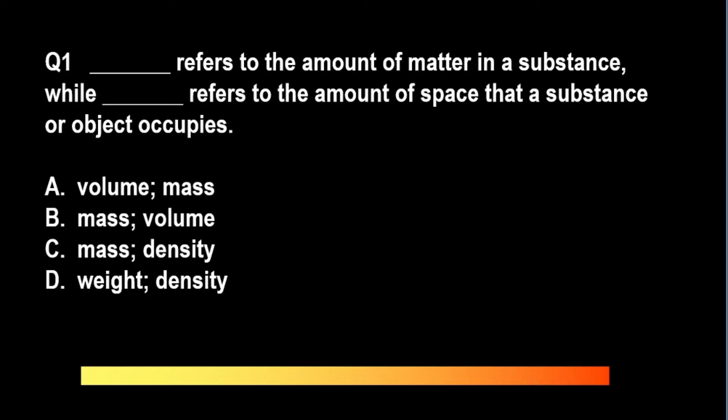The correct answer is letter B: mass and volume. Take note that mass pertains to the amount of matter in a substance while volume is the amount of space occupied by the substance or object. For letter D, weight depends on the pull of gravity and does not pertain to the amount of matter in an object. For instance, a ball with a mass of five kilograms will have the same mass on the moon but it will weigh less because there is less gravity on the moon.